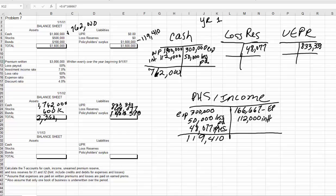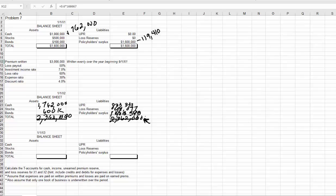For our policyholder surplus, we subtract because this is a growing company that looks like it's losing income out of policyholder surplus. So $1.6 million minus $119,410 is $1,480,590. Our total is $2,362,000, and the same on the other side. Always calculate your totals because if they differ, that's a good check showing you may have a problem in your T-accounts. I can give more partial credit if I see you've put the wrong balance and tried to figure it out, rather than just assuming both sides are equal.